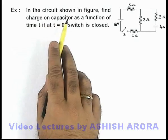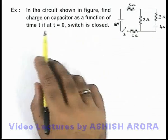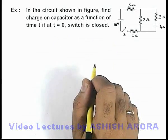In this example, in the circuit shown in figure, we are required to find the charge on capacitor as a function of time t, if at t equal to zero the switch is closed.